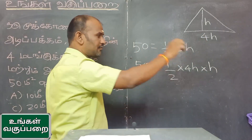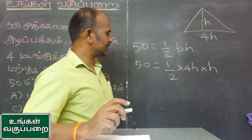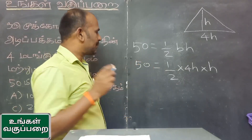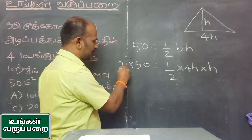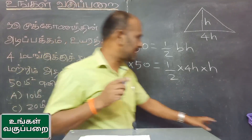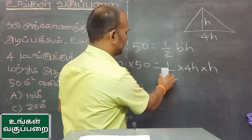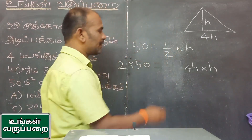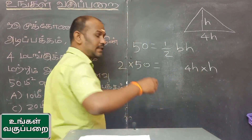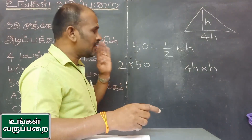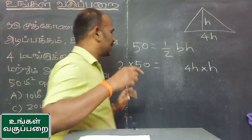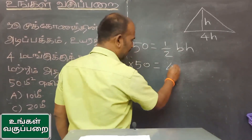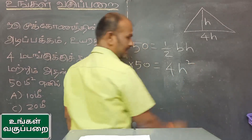50 equals half of 4h into h. Now the two — half of 4h into h. 4h into h gives us 4h squared.